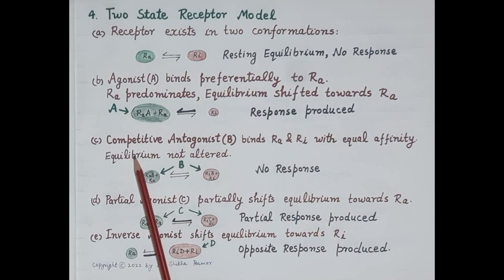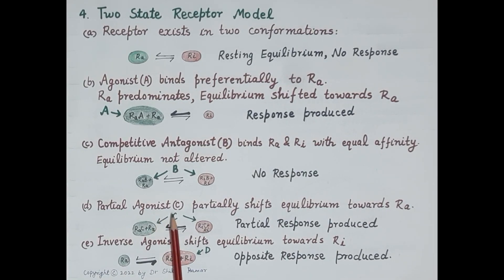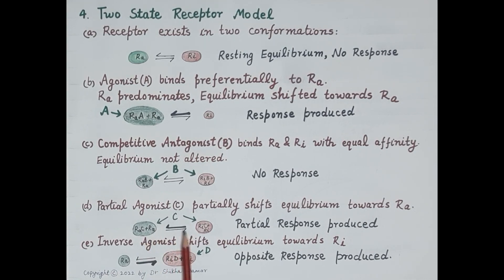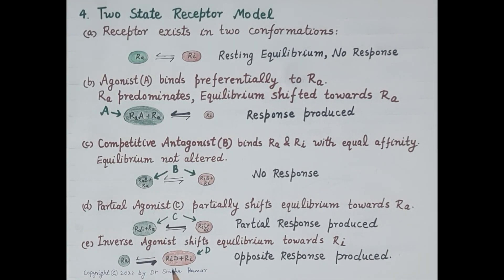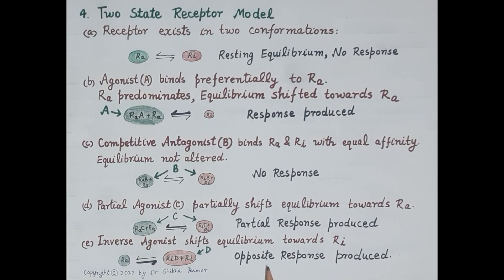An agonist (A) binds preferentially to the active conformation RA, so equilibrium is shifted towards RA, RA predominates, and a response is produced. A competitive antagonist (B) binds to RA as well as RI with equal affinity, so the equilibrium is not altered and no response is produced. A partial agonist (C) binds to both RA and RI but shows slightly greater affinity for RA, so equilibrium is slightly shifted towards RA and a submaximal or partial response is produced. An inverse agonist (D) has high affinity for RI, shifts the equilibrium towards the inactive state, and thus produces a response opposite to that of the full agonist.